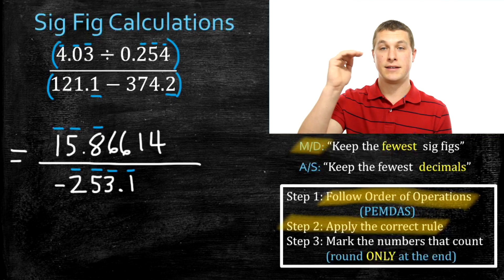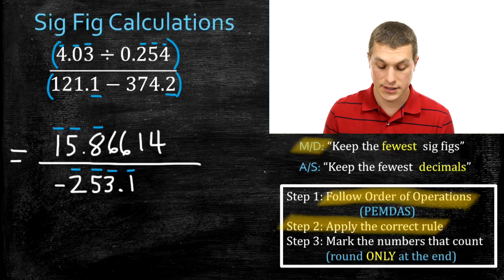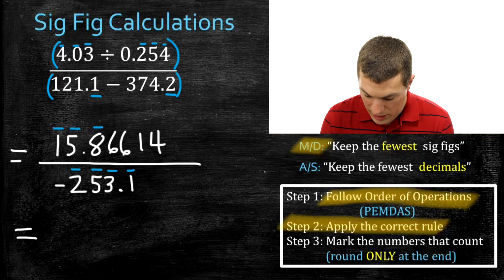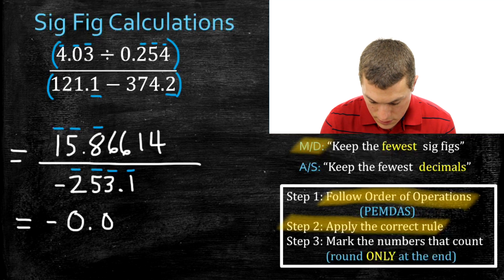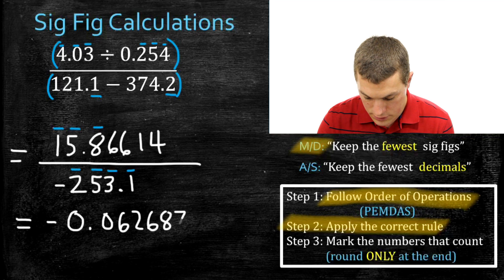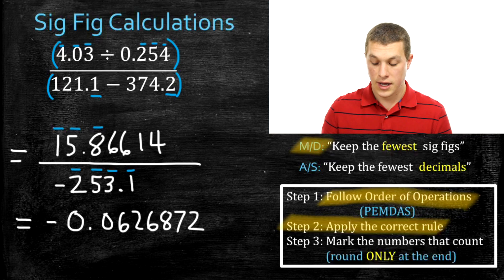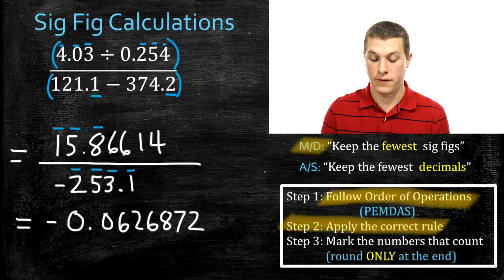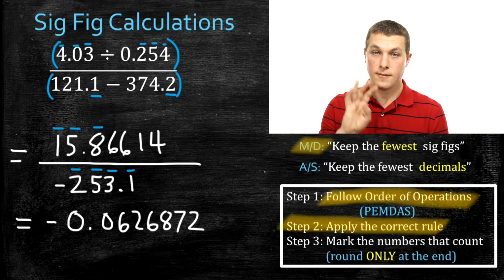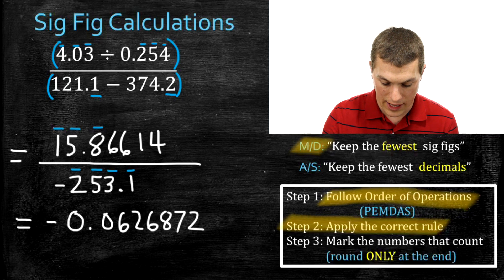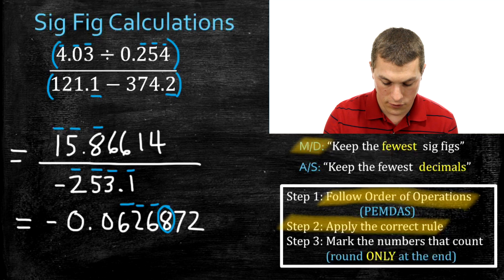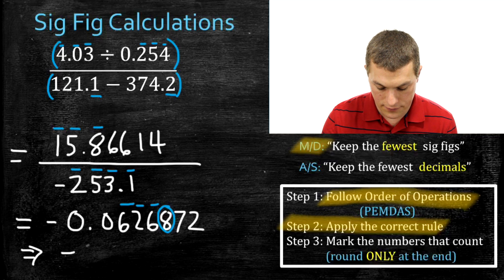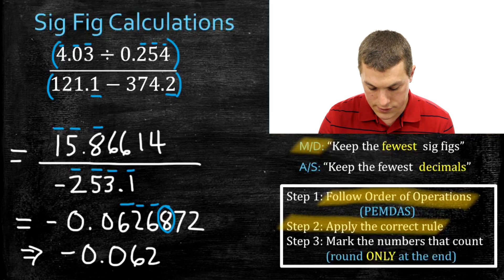Last thing — follow order of operations. Only one operation left: division. I divide 15.8... by -253.1 and get -0.0626872 with more digits. Now I round. I just did division, so I follow the multiplication-division rule — keep the fewest sig figs. The numerator had 3 sig figs and the denominator had 4, so I keep 3. Rounding, the 8 rounds my 6 up, giving me a final answer of -0.0627.